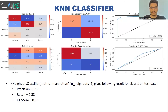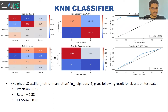We also experimented with the KNN classifier. On the test set for class one, we got precision 0.17, recall 0.38, and F1 score 0.23. The overall accuracy was 62 percent.